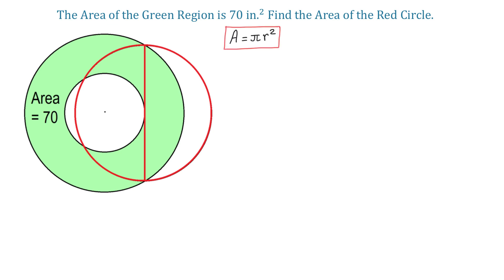Now, let X be the radius of the large circle, and Y be the radius of the small circle. Then, to find the area of the green region, we would take the area of the large circle and subtract the area of the small circle. That would be pi X squared minus pi Y squared, and we know that this area is 70 square inches.